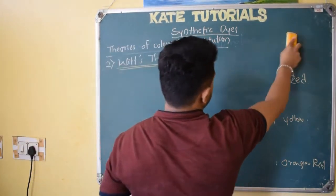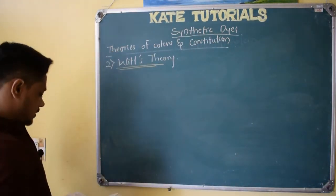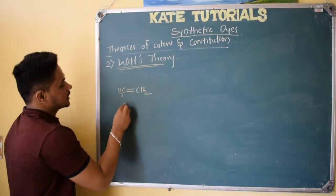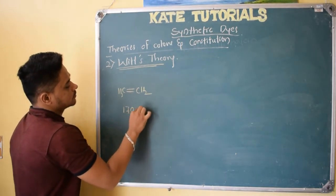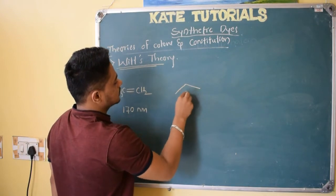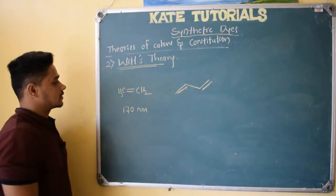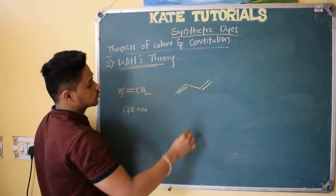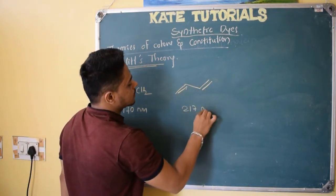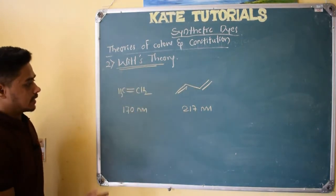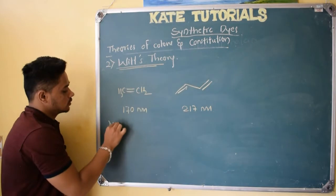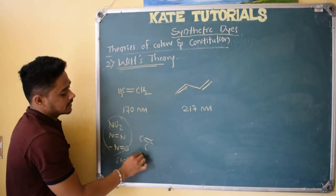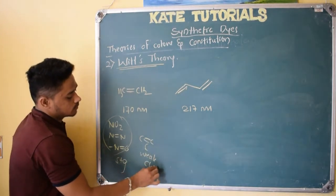Let me take one more example. Ethylene — CH₂=CH₂ — absorbs at lambda max around 170 nm. If I take 1,3-butadiene — CH₂=CH-CH=CH₂ — by adding one more double bond in conjugation, the absorption shifts to 270 nm. Both are still colorless as they lie in the invisible region. C=C is a weak chromophore, whereas NO₂, N=N, and N=O are strong chromophores.